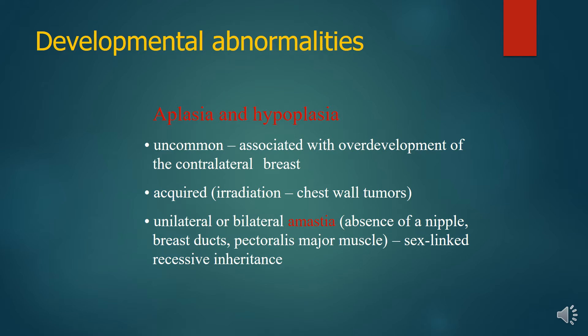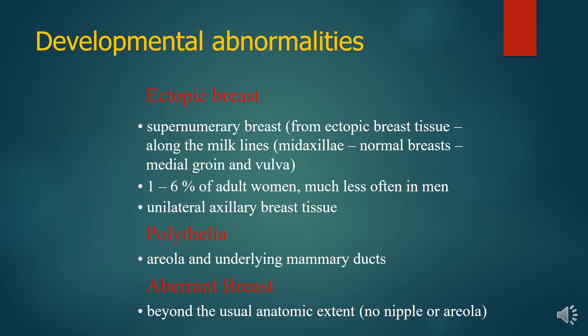Aplasia or hypoplasia is uncommon and associated with overdevelopment of the contralateral breast, acquired irradiation of chest wall tumors, and unilateral or bilateral amastia — absence of the nipple, breast ducts, and pectoralis major muscle. Ectopic or supernumerary breasts can be found in one to six percent of adult women, much less often in men, including unilateral axillary breast tissue, and there could be aberrant tissue as well.